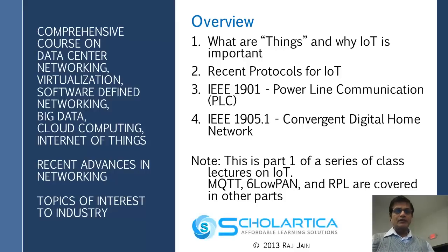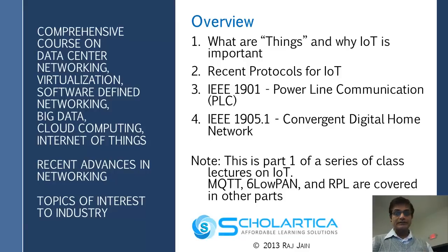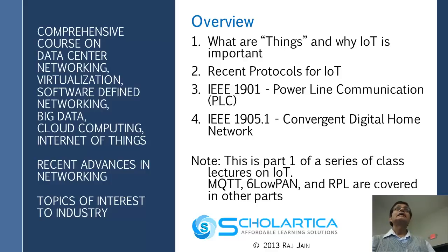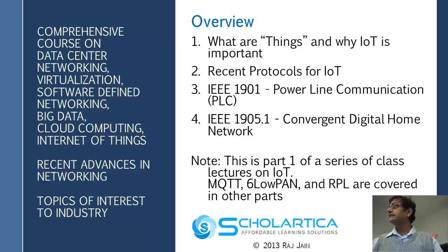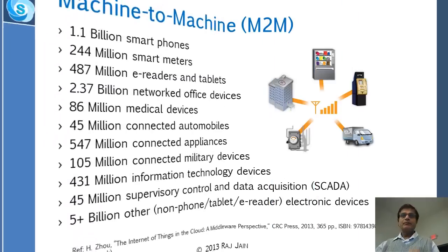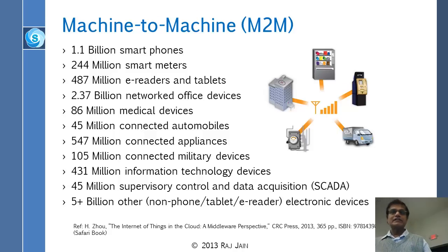What is new in IoT — basically what are the new networking protocols. In particular there is IEEE 1901 and 1905; those two protocols we will discuss today. Then there are other protocols we will discuss in the next few classes: MQTT, 6LoWPAN, RPL, etc.